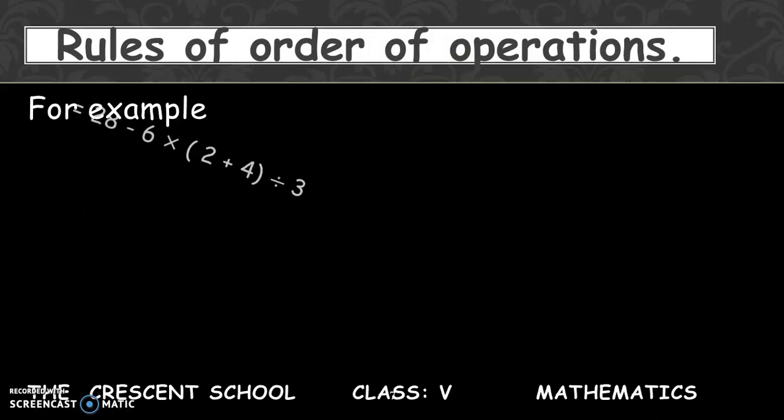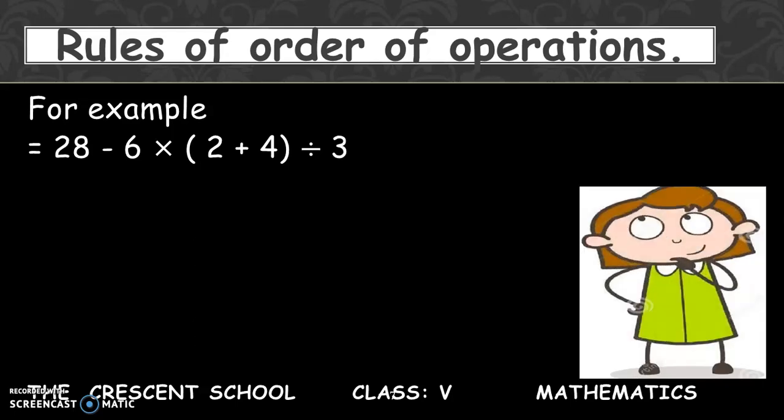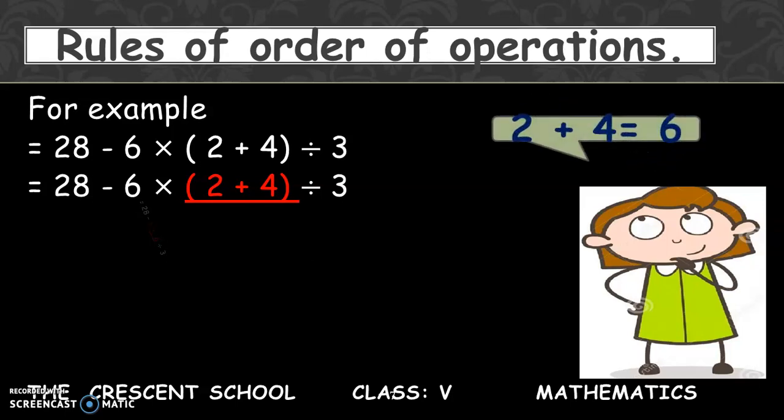For example, 28 minus 6 multiply bracket start 2 plus 4 bracket close, divided by 3. As you can see there is only one bracket. So first of all you have to sort out the bracket. So 2 plus 4, what is the answer? 2 plus 4 is 6. Now our expression is 28 minus 6 multiply by 6 divided by 3. Now bracket is sorted out.